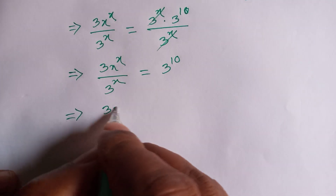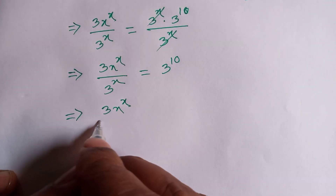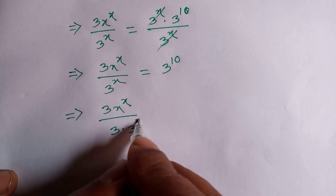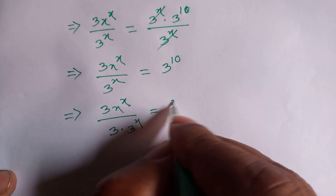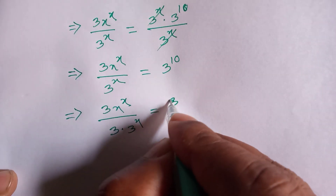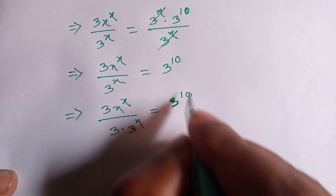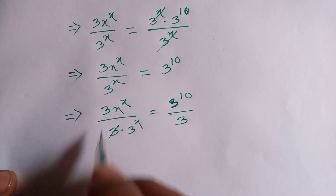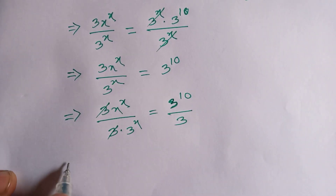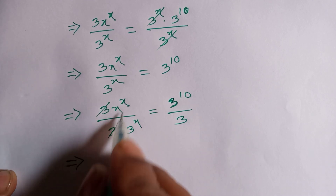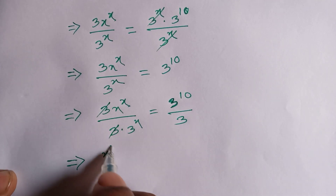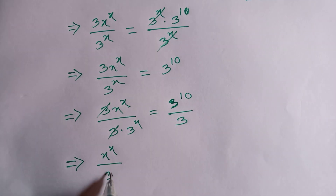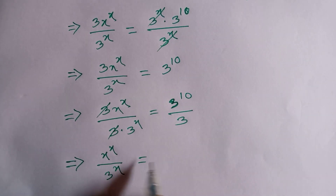So 3x to the power x divided by 3 times 3 to the power x is equal to 3 to the power 10 divided by 3. This 3 and this 3 cancel, so it remains x to the power x divided by 3 to the power x is equal to...